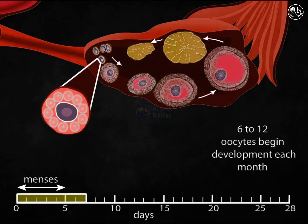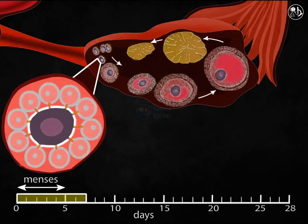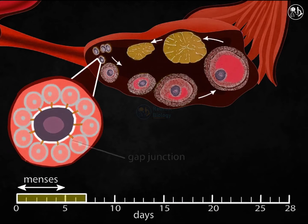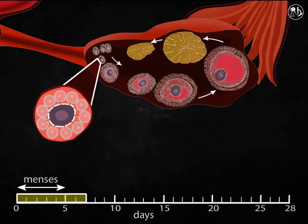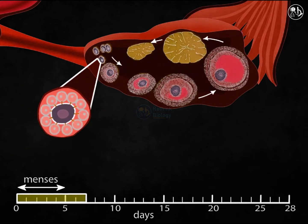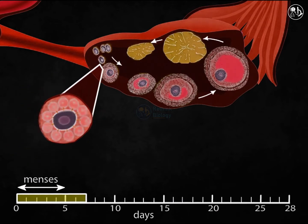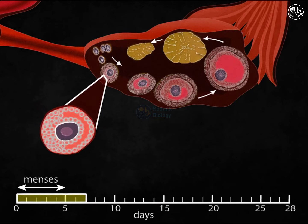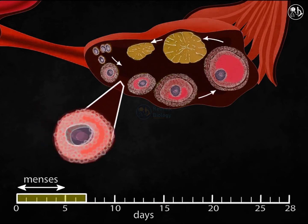Six to twelve primary oocytes mature over the first seven days of a cycle. Follicle cells communicate with oocytes and deliver nutrients to them through holes called gap junctions. As the follicles mature, each oocyte grows in size while the surrounding follicle cells split and multiply.